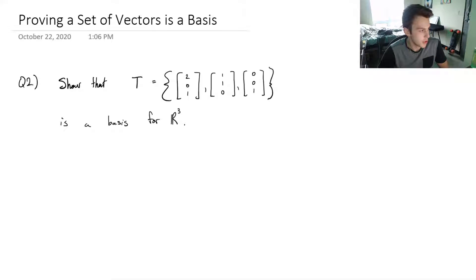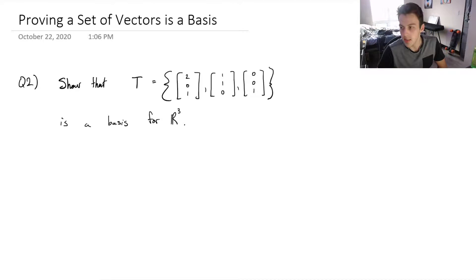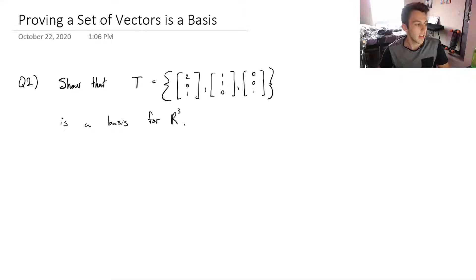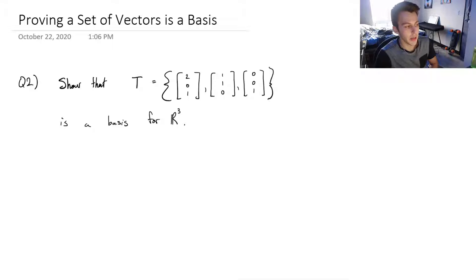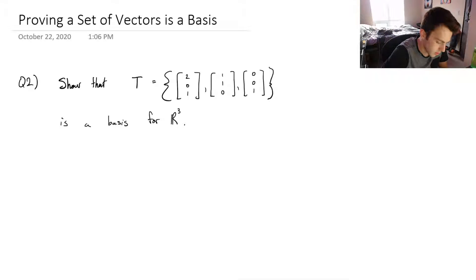I wanted to do a video that shows you when you're given a set of vectors, how we can prove that this is a basis for a certain vector space. In this case, these three vectors are a basis for R3. Remember, a basis is a set of linearly independent vectors that span a vector space. That means when I take the linear combination of these three vectors, I'll be able to span every single point in R3, and I just need to show that they are linearly independent.